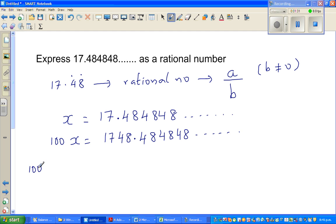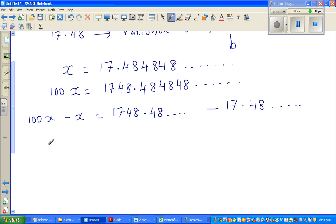So if you do 100X minus X is same as writing 1748.4848. So if you take away, this is 99X is equal to, so let me write this, 1748.4848 recurring, take away 17.48. So this becomes, this becomes 0 and this is 1, this is 3, so 1731 is nothing but 99X.